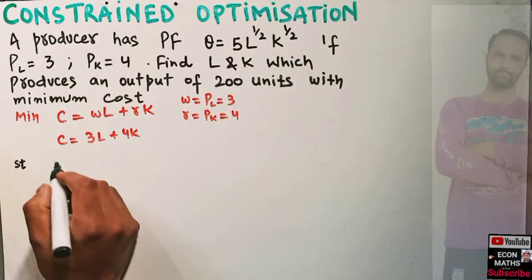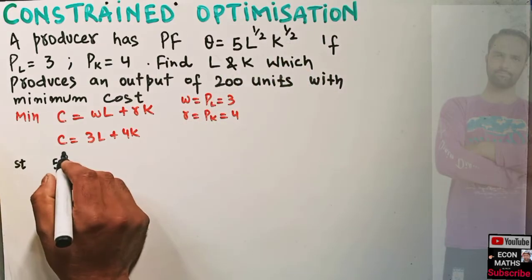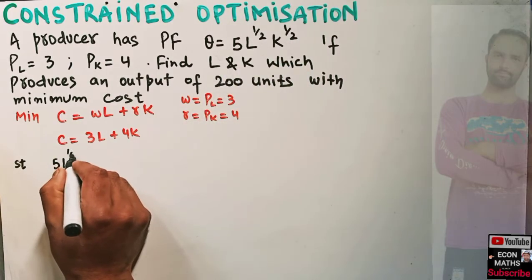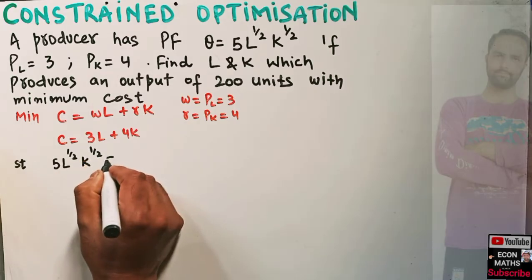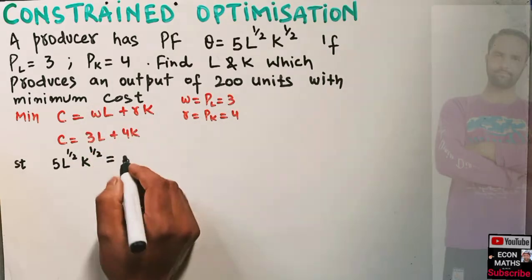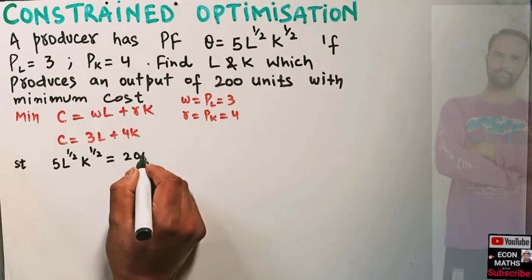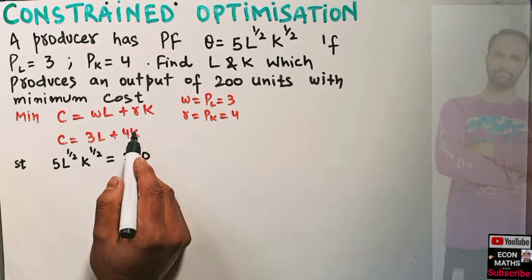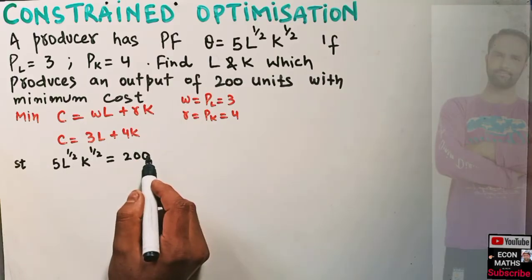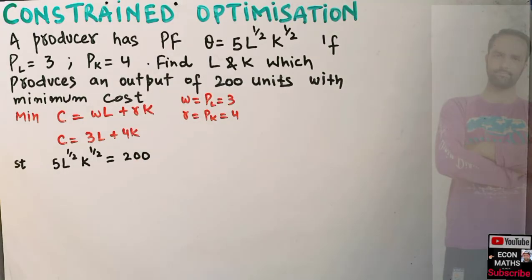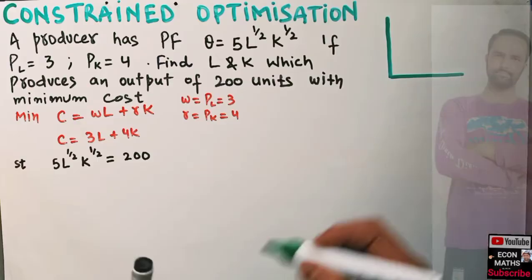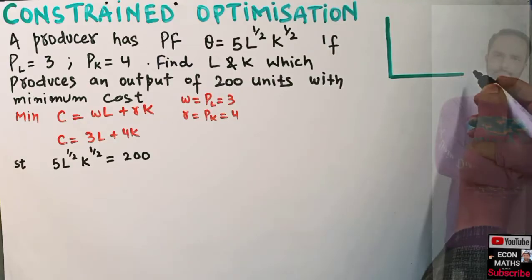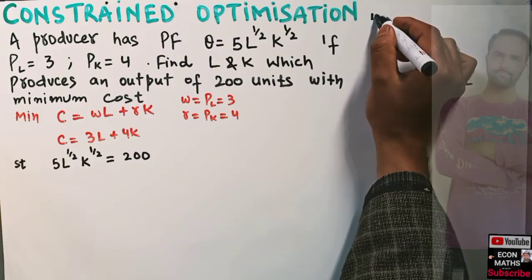We want to minimize our cost given the production constraint. The production constraint is that 5L^(1/2) × K^(1/2) should be equal to the output of 200. Simply, we want to minimize this cost subject to this production quota. Graphically, let me draw a simple graph with units of labor on the horizontal axis and units of capital on the vertical axis.